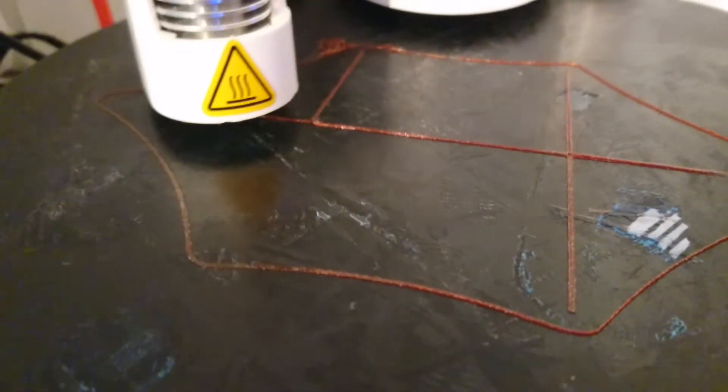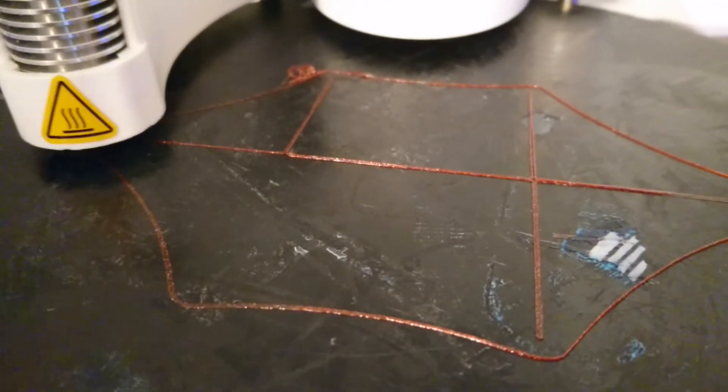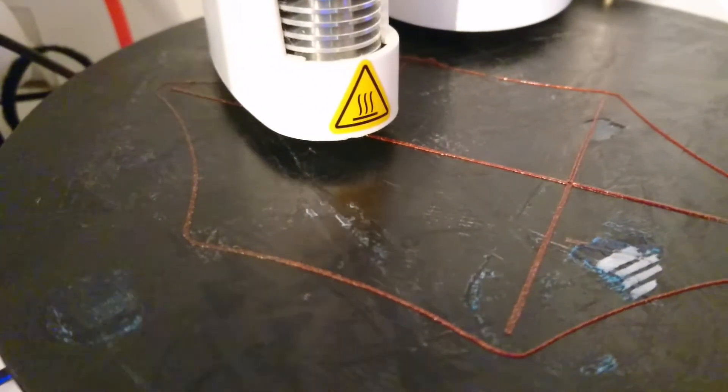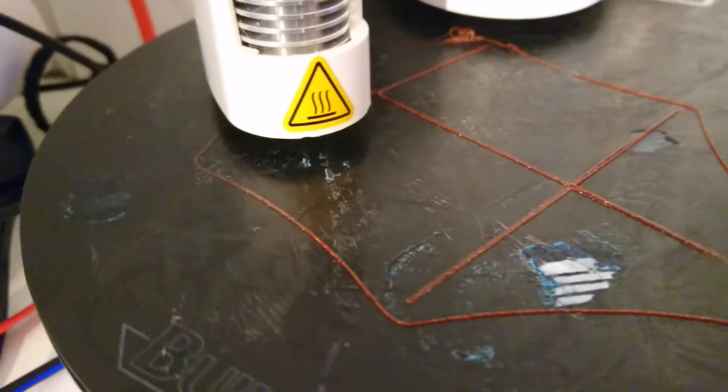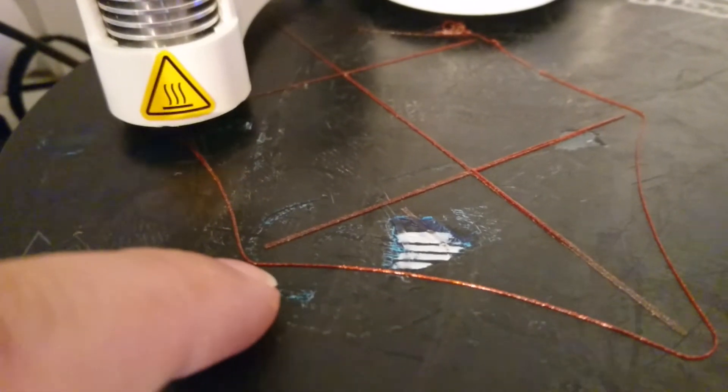Of course build plates aren't entirely level, so you need to find the middle ground. This is where the brim is really good to look at.